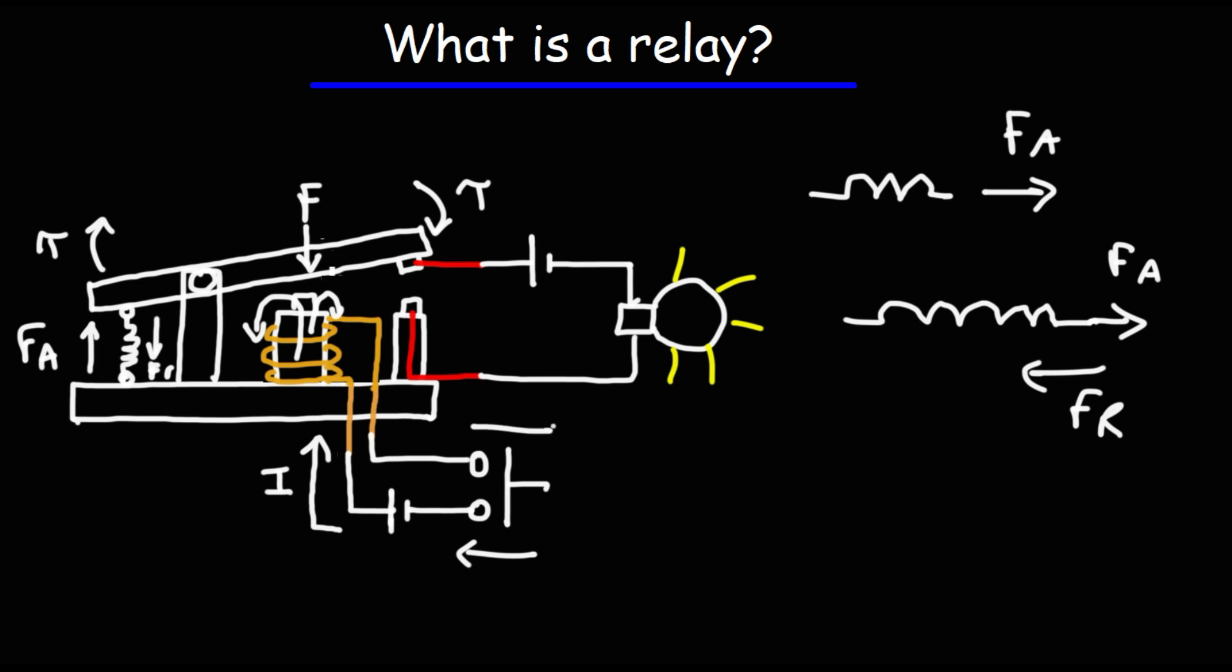But if we open the switch to circuit one, that cuts off the current. When the current stops, the magnetic field will collapse and eventually disappear. Once the electromagnet is deactivated, this force disappears, which means this torque disappears as well.